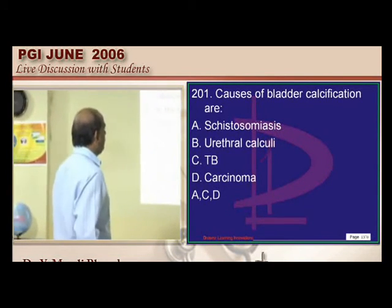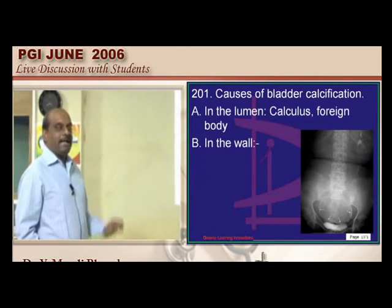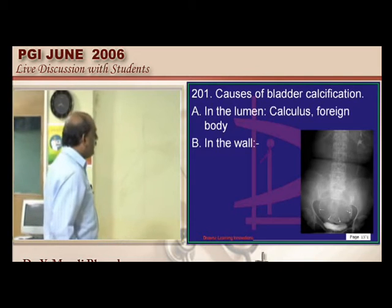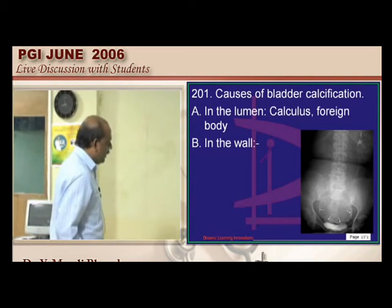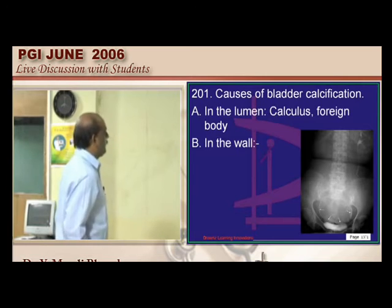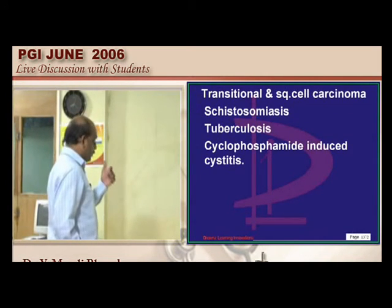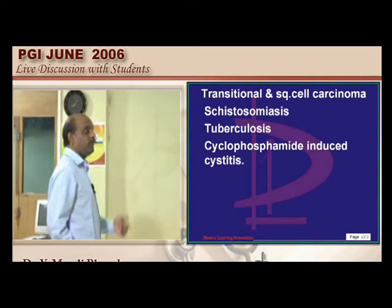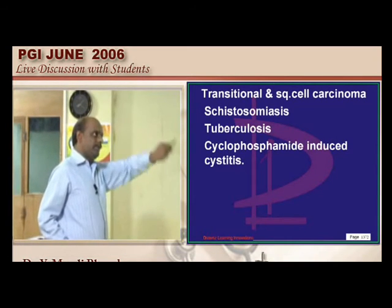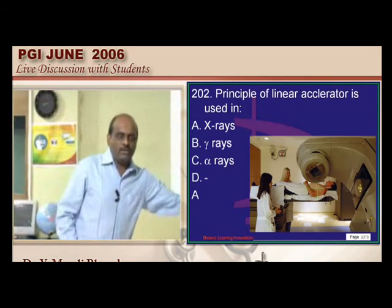Causes of urinary bladder calcification: in the lumen — calculus or foreign body. Along the wall circumference, transitional cell carcinoma, squamous cell carcinoma, schistosomiasis, tuberculosis, and cyclophosphamide-induced cystitis can all be responsible for bladder wall calcification.